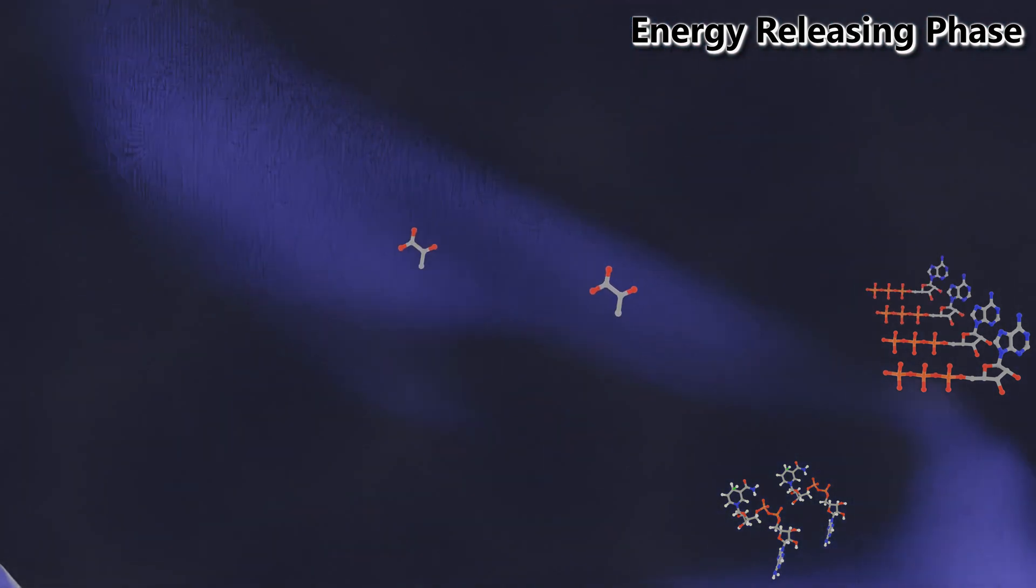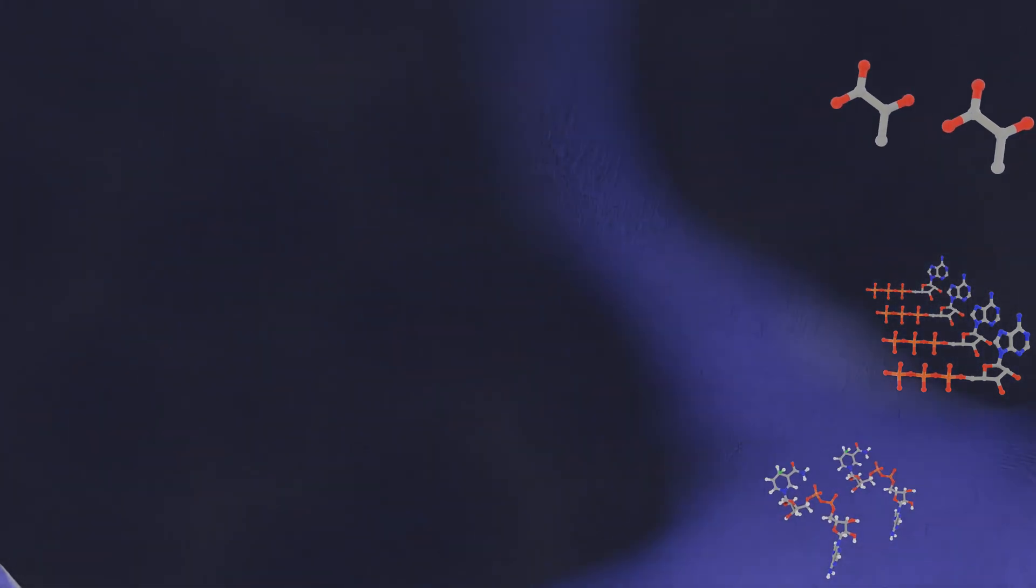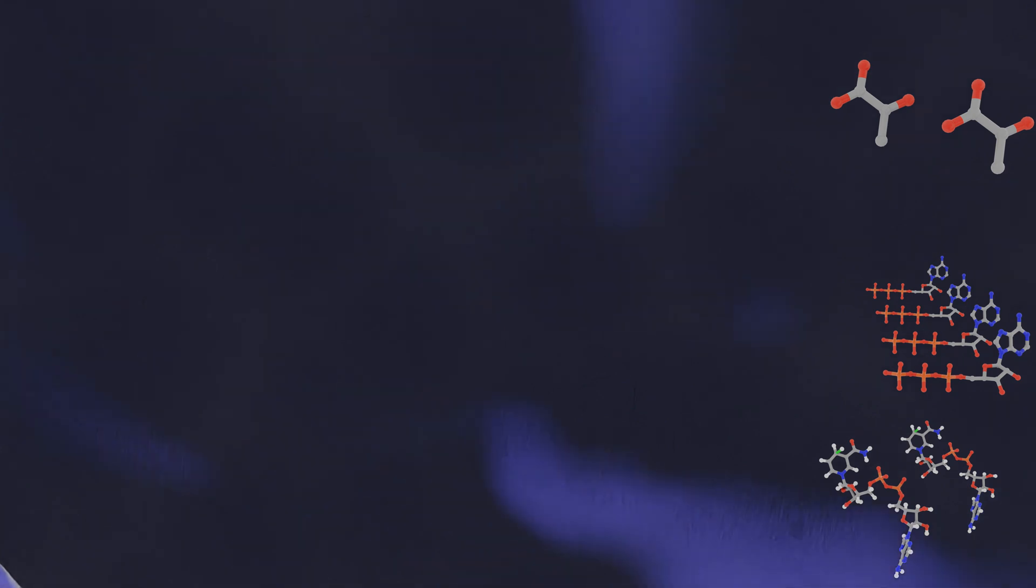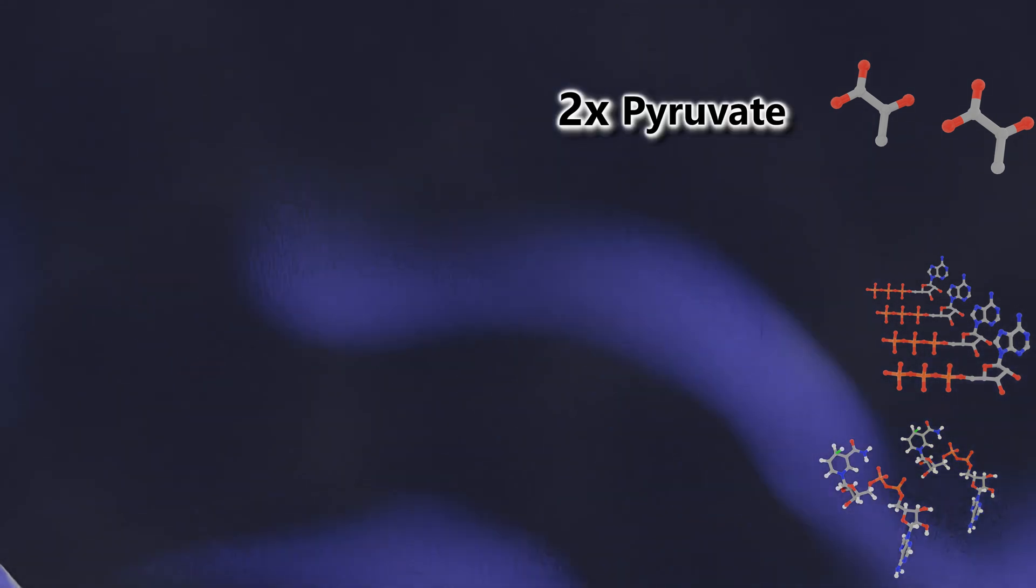And finally, our last two ATP molecules are synthesized from the remaining phosphates. This is going to leave us with two pyruvate molecules as our final result from the altered glucose molecule.